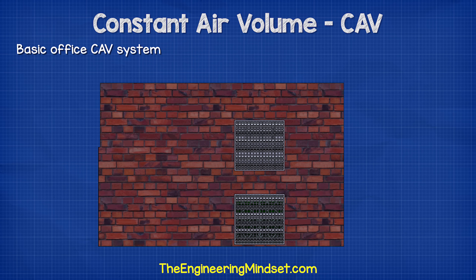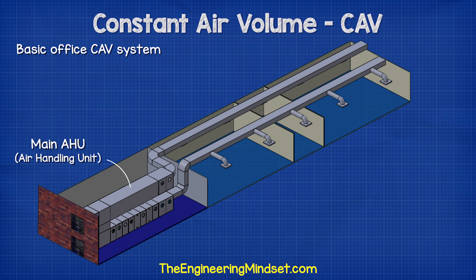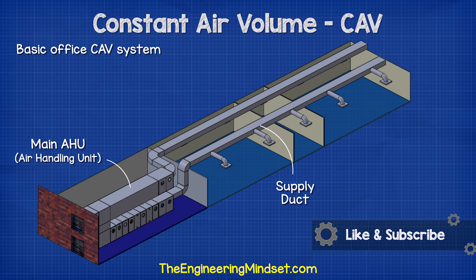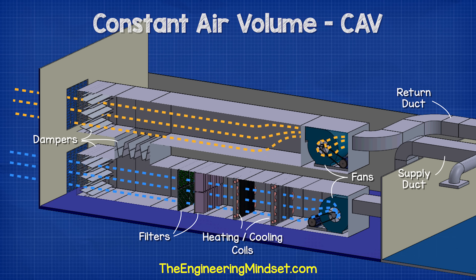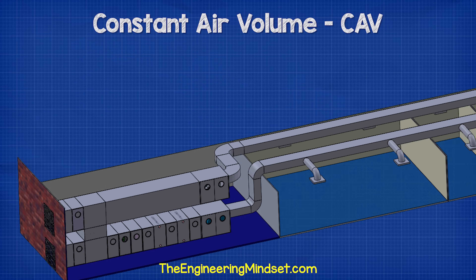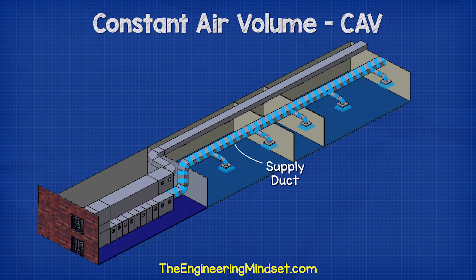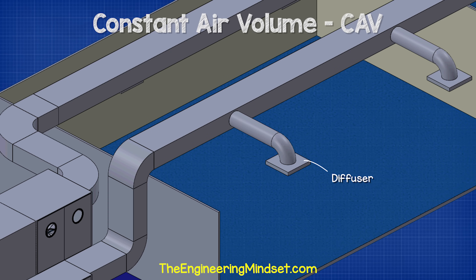Here we have a simple model of a CAV system for a small office. First of all, we have the main air handling unit which is located in the mechanical plant room. From this, we have the main supply duct. The fresh ambient outdoor air is sucked into the air handling unit, it is filtered and then heated up or cooled down within the AHU, and then a fan pushes this out down the ductwork to be distributed throughout the building. Coming off of the main supply duct are a number of branches, and each branch has a diffuser at the end.